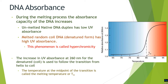The increase in UV absorbance for the denatured coil is used to follow the transition of the helix to coil. The temperature at which half of the DNA in solution melts and reaches a midpoint is called the melting temperature, or Tm. So Tm is the temperature of a DNA solution at which half of the DNA is denatured and half is present as the helical form.